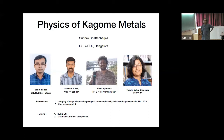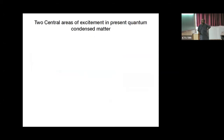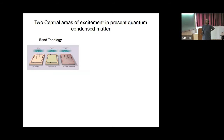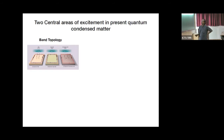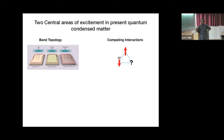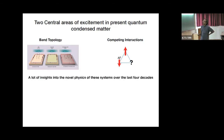Just to give a short overview: the two central areas of excitement in present quantum condensed matter are band topology, which we heard about in the last talk — where non-trivial band structures or electron dispersions lead to topological phases characterized by topological invariants in the presence of symmetries but weak interactions — and the other area is competing interactions, which leads to frustrated exchanges, a typical example being frustrated magnets.